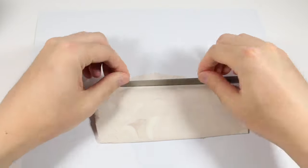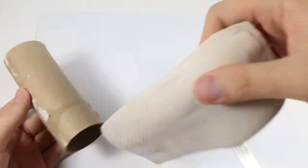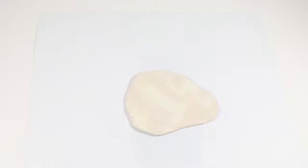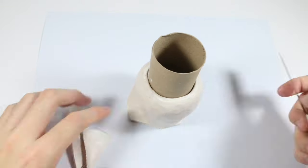And after trimming the edges I'm wrapping around the toilet paper roll and then blending the ends together. And then I'm putting on the base and I'm just cutting off the excess.